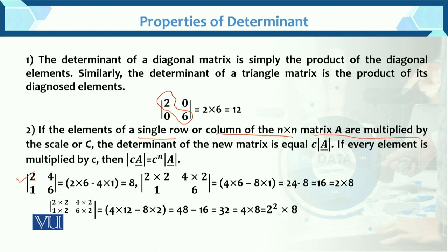Now, if we multiply matrix A by a scalar row-wise — say multiply the first row by 2 — the new row becomes [4, 8]. The new determinant = 4×6 − 8×1 = 24 − 8 = 16. This equals 2 × 8, meaning the constant multiplied by the original determinant. So when a single row or column is multiplied by constant c, the new determinant = c × det(A).